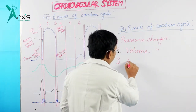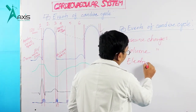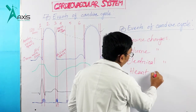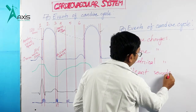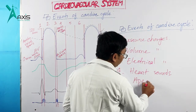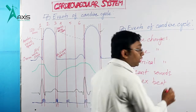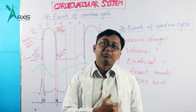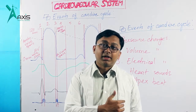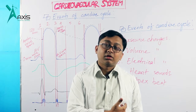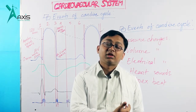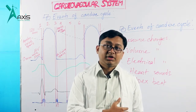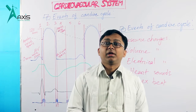So, third is electrical changes and fourth is your heart sounds. Then apex beat — this is also a cardiac event. We feel it at the left fifth intercostal space, close to the mid-clavicular line. This is apex beat, and it is also a part of the cardiac event.